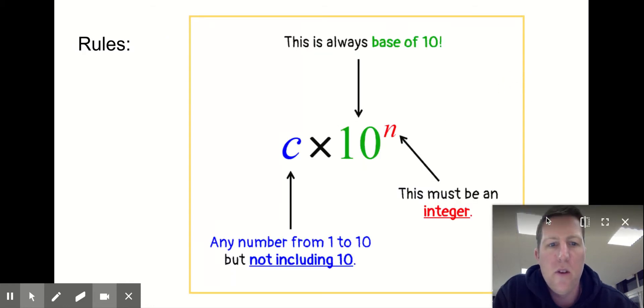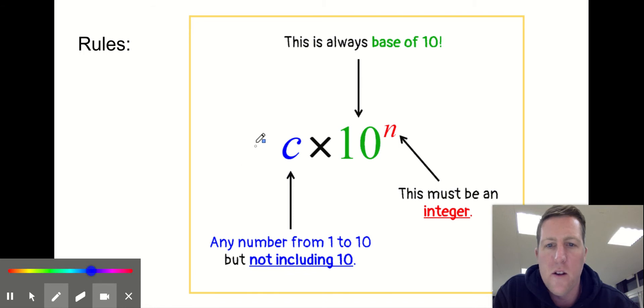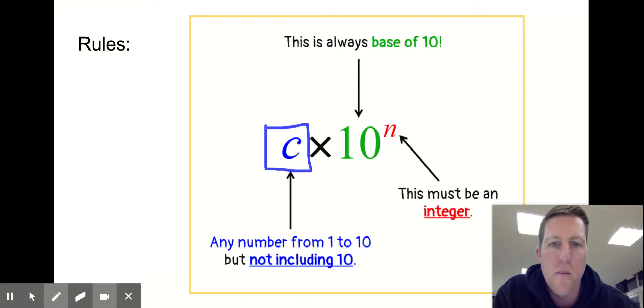Now, for scientific notation, there's some rules that we have to follow. This is always the format that we stick to. You could imagine it's maybe better to imagine it as like a blank box, and in this box you're going to put a number.